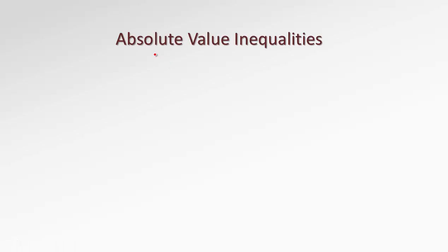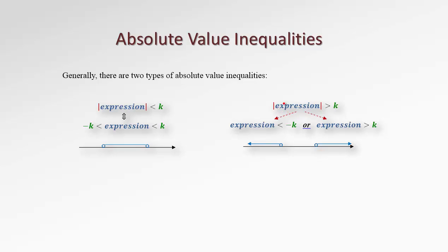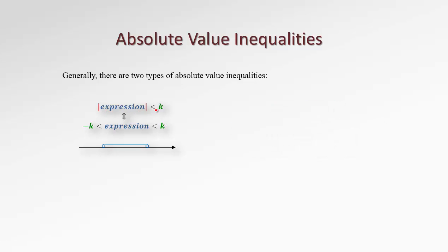In this lesson we'll study how to solve absolute value inequalities. Generally there are two types of absolute value inequalities. We may have the absolute value of something smaller than or equal to a certain constant number k, or we may have the absolute value of a certain expression bigger than or equal to a constant number k. Let's focus on the first case.